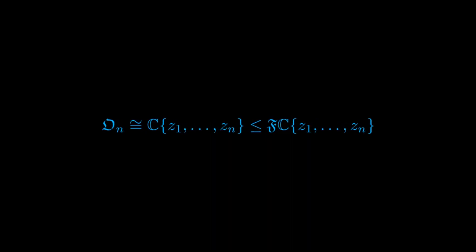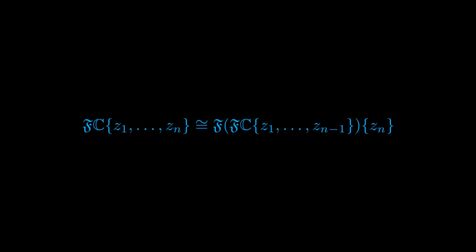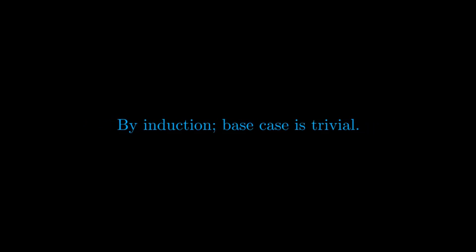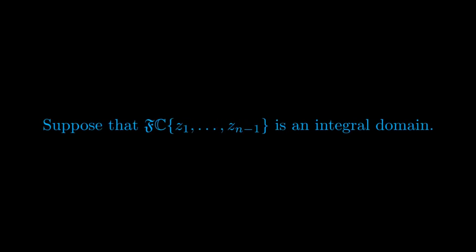Another property we can infer about O is that it is an integral domain. This is true since O is isomorphic to the ring of convergent power series in n variables over C, which is in turn a sub-ring of the ring of formal power series in n complex variables. The latter is isomorphic to the ring of formal power series in one variable over F, where F denotes the ring of formal power series in n−1 complex variables. We will prove that the latter is an integral domain by induction.